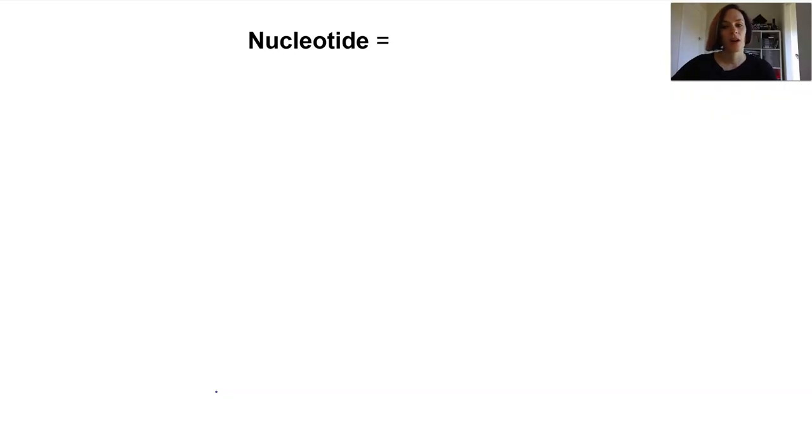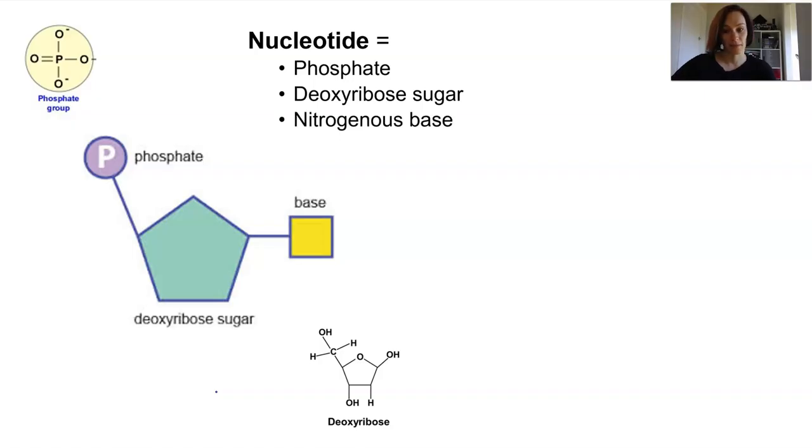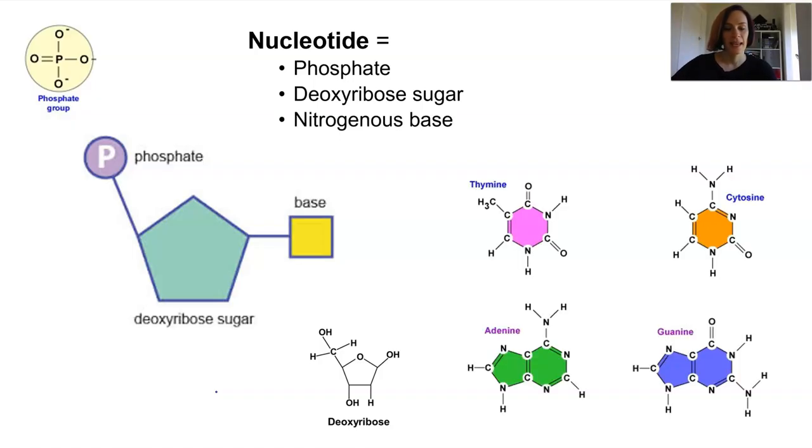Now the monomer of DNA molecule is known as a nucleotide. Each nucleotide consists of a phosphate, a five carbon sugar and a nitrogenous base. The phosphate molecule here is consistent between all nucleotides and it's slightly negatively charged. The sugar here is a pentagonal molecule, made from five carbon atoms, deoxyribose in DNA but also ribose in RNA hence the different acronym.